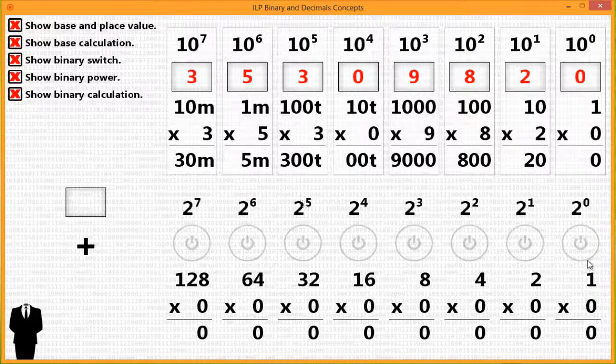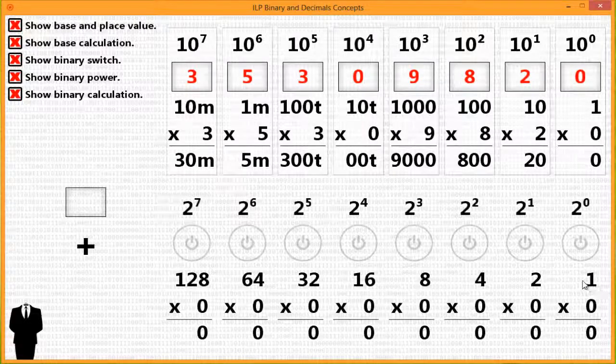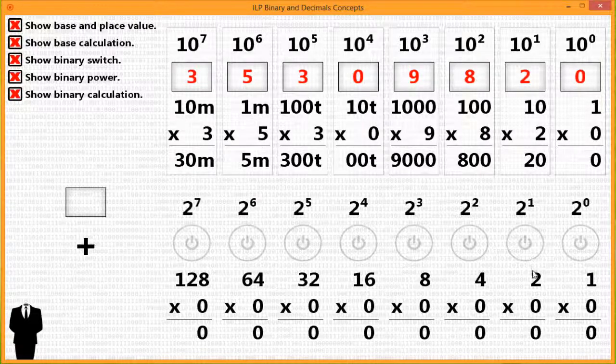In the binary system, same concept. You first start at 2 to 0, it's 1. When you go to the next place value, you get 1 times 2, which is 2.